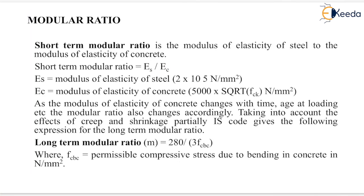The next property is the modular ratio. The short-term modular ratio is the modulus of elasticity of steel to the modulus of elasticity of concrete, given as Es/Ec. Es, the modulus of elasticity of steel, equals 2 × 10^5 Newton per mm square. The modulus of elasticity of concrete equals 5000 √fck in Newton per mm square.